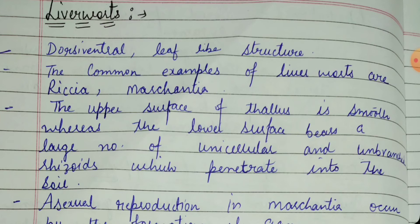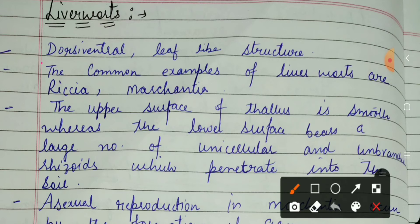Let's start with the first topic, liverworts. The body of liverworts is dorsiventral. Dorsiventral means it has two sides, one upper and one lower. For example, your hand: the upper surface where you have nails is the dorsal surface.